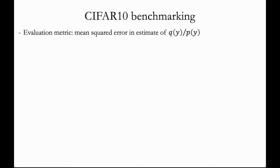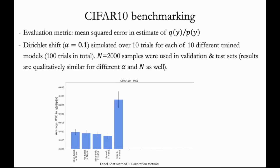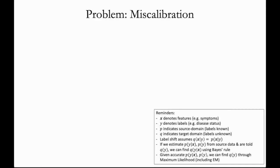So let's investigate how the maximum likelihood approach in the absence of any calibration performs compared to BBSE and RLLS. For our evaluation metric, we'll use the mean squared error in the ratio q(y) divided by p(y). We simulated label shifts by drawing class proportions from a Dirichlet distribution with alpha equals 0.1, and we had a total of 100 trials involving different trained models. And we found that maximum likelihood on its own does substantially worse than BBSE and RLLS.